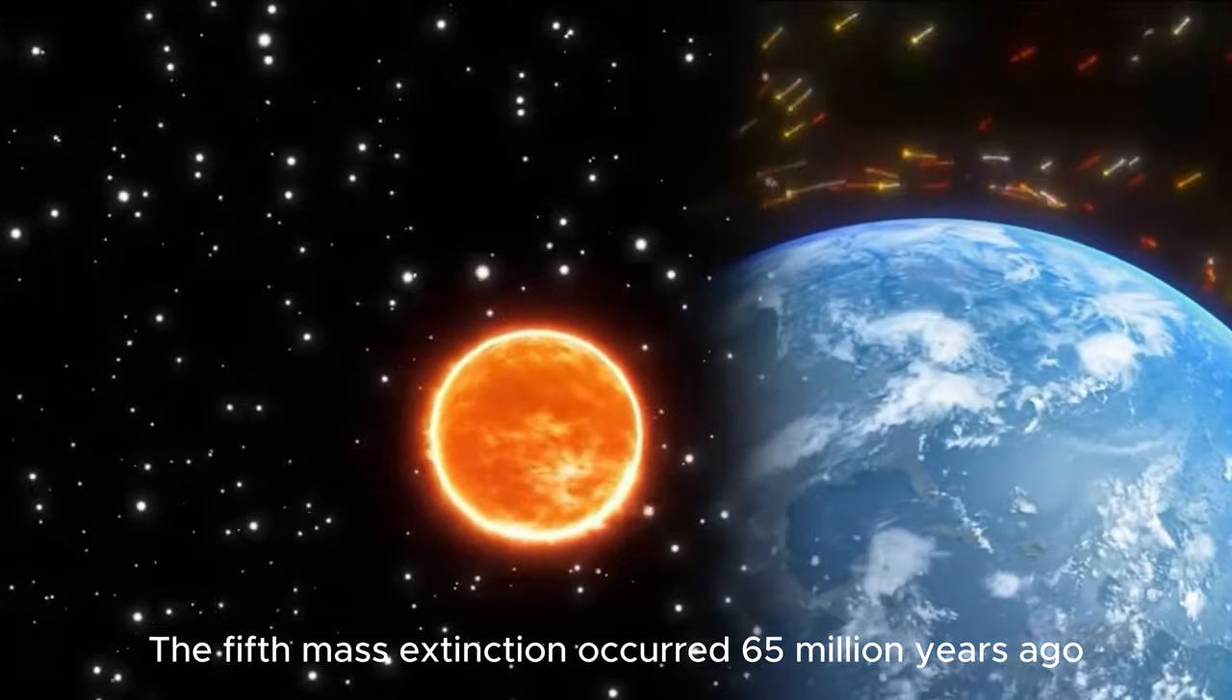The cause of mass extinctions is nothing more than climate, geology, or alien asteroid impact. Maybe these reasons are related to the attractive forces in the solar system. For example, the fifth mass extinction occurred 65 million years ago.